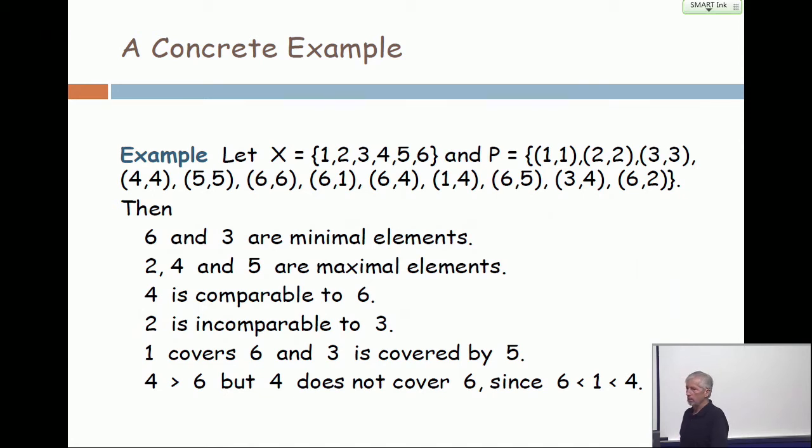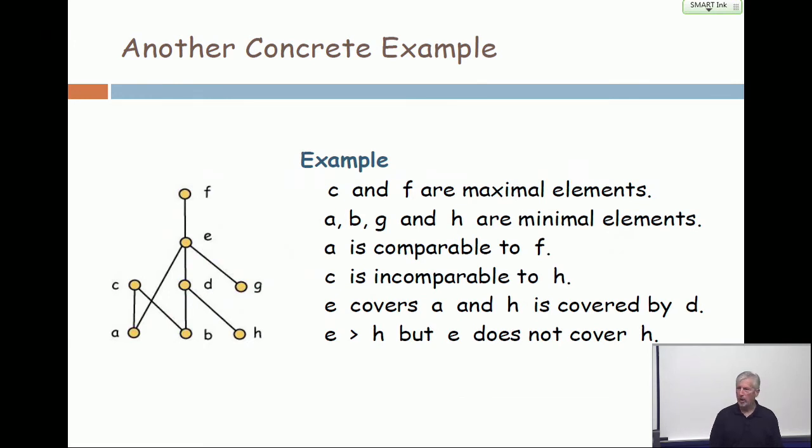One covers six. And three is covered by five. Four is bigger than six, but four doesn't cover six because you can put one in between it. Here's another concrete example showing you some of the advantages, at least in modest size, of the visual quality of the order diagram. C and F are maximal elements. A, B, G, and H are minimal elements. Don't forget G. You see why G is a minimal element?